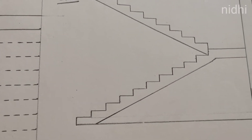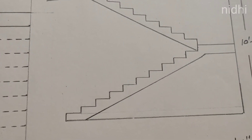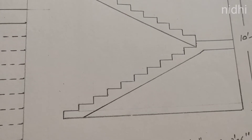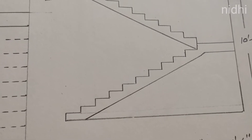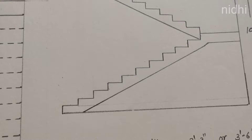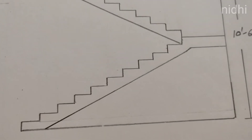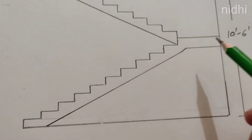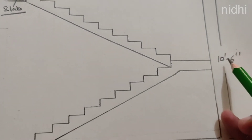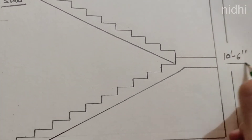In this video I will explain how to calculate the number of steps and how to get the number of risers. For example, we have a building height — slab height — that is 10 feet 6 inches.